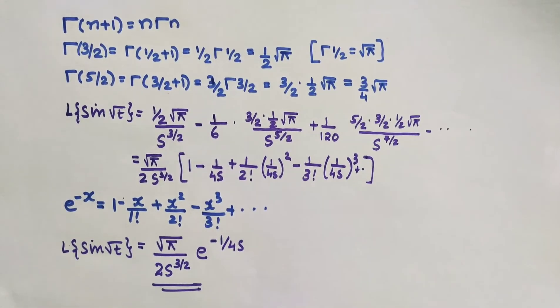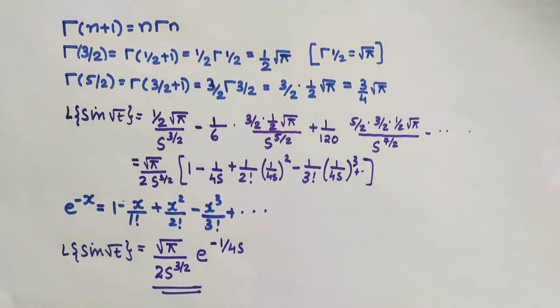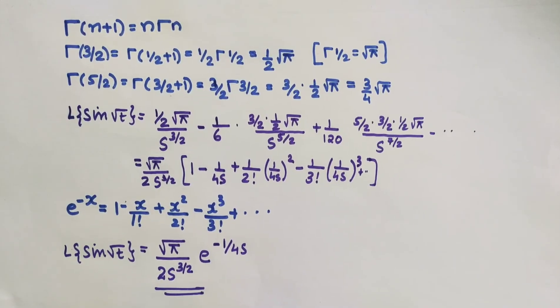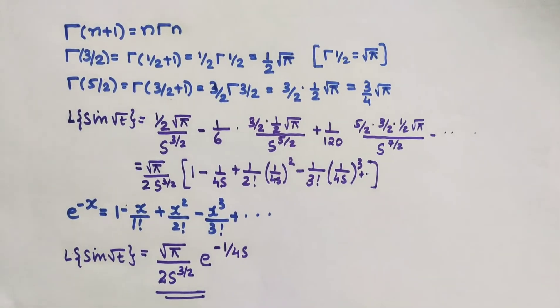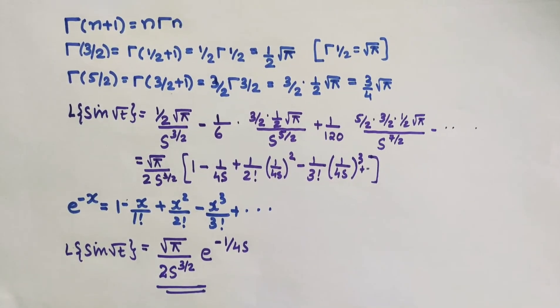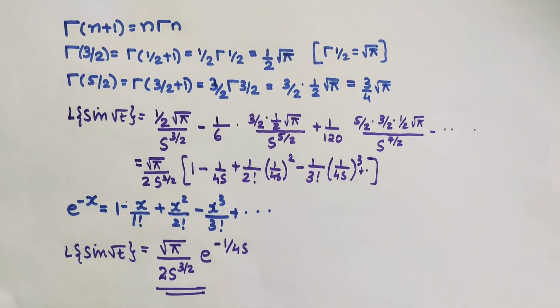Therefore, the Laplace transform of sin(√t) is equal to √π / (2s^(3/2)) · e^(−1/(4s)). Hope you liked this video, thank you for watching.